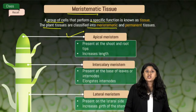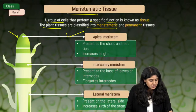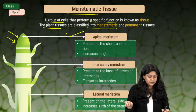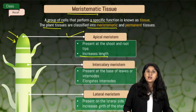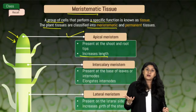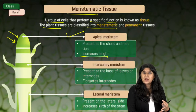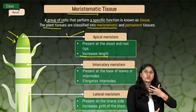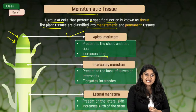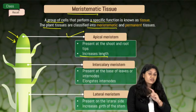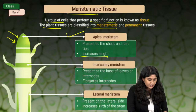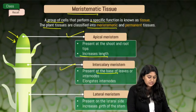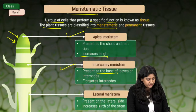We have apical meristem, which grows at the shoot tip region. At the tip they keep on dividing and that is why we see an increase in length. Some important characteristics of meristematic tissues: they have dense cytoplasm and they don't have vacuoles — basically they don't store materials. Then we have intercalary meristem, which is present at the base of leaves or internodes.